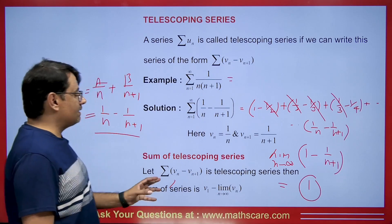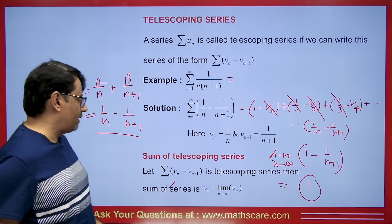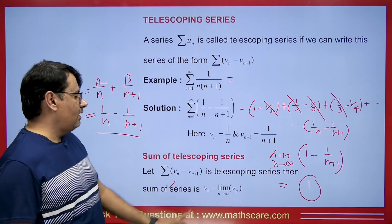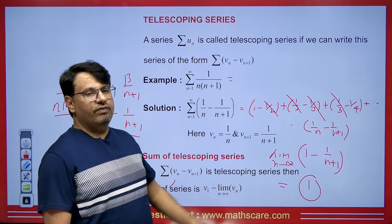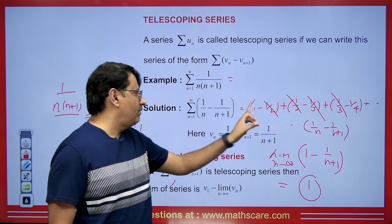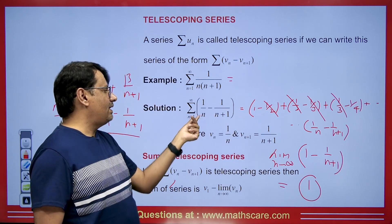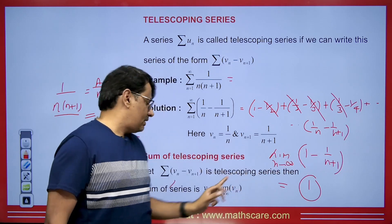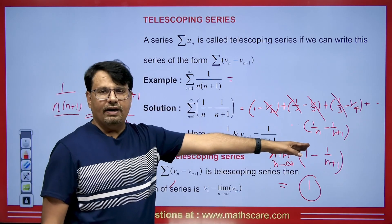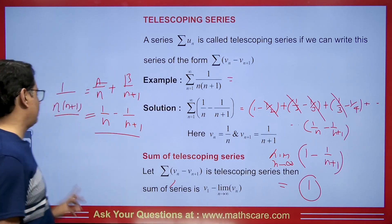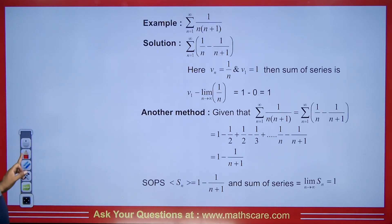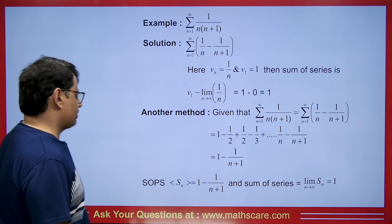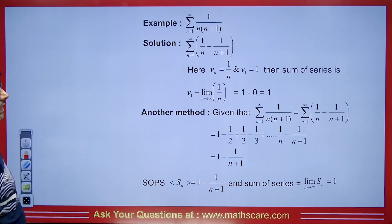It is crucial to understand this because the telescoping series plays an important role. When we encounter a series like this, the sum of the series is v₁ minus the limit as n→∞ of vₙ₊₁, because v₁ is the first term when n = 1. So v₁ minus the limit of vₙ₊₁ as n→∞ gives us 1. In this way we can do this very easily.